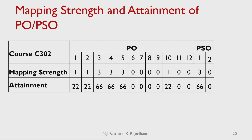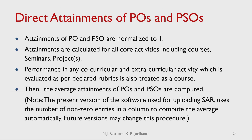This summarizes the contribution of this particular course towards POs and PSOs. One row shows the mapping strength, another row shows the attainment. Because of this course, the attainment of POs is 22% for PO1, 22% for PO2, 66% for PO3, and so on. This is the contribution from this one single core course. We will have to determine the contributions from all other activities to determine the direct attainment of the POs and PSOs.